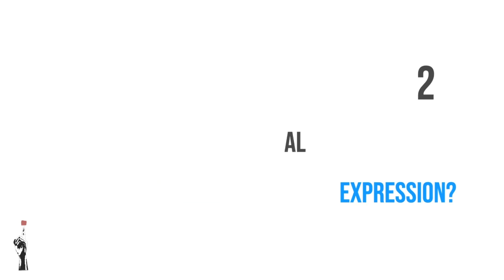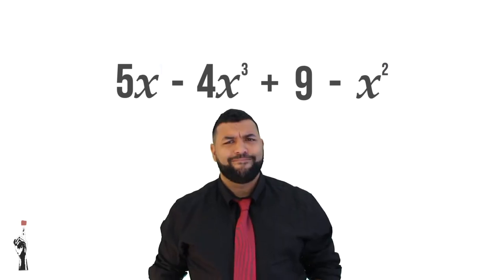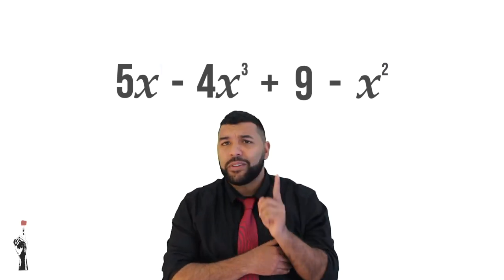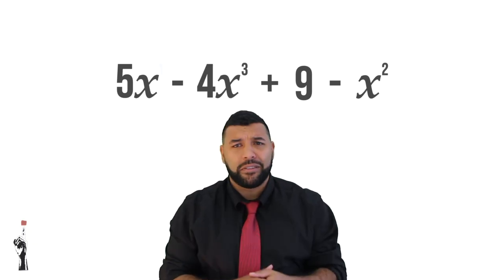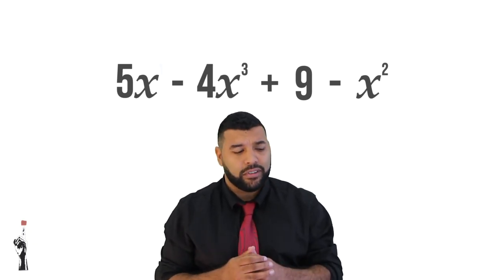Let's take a look at the last example. We have 5X minus 4X cubed plus 9 minus X squared. This one looks a bit different to the others, because it is slightly jumbled up.